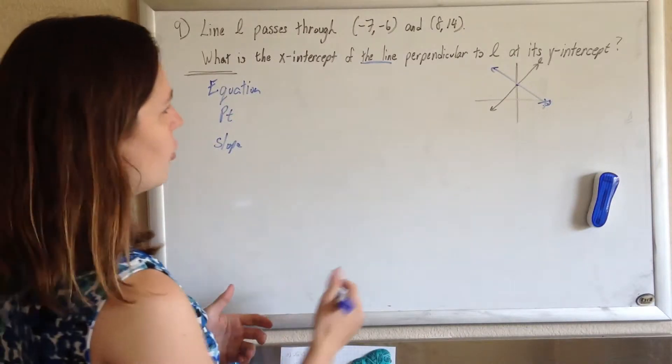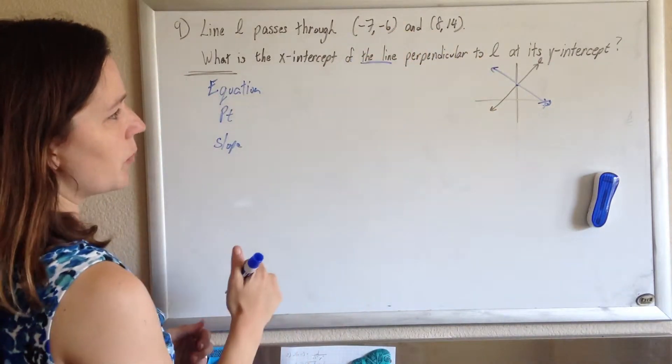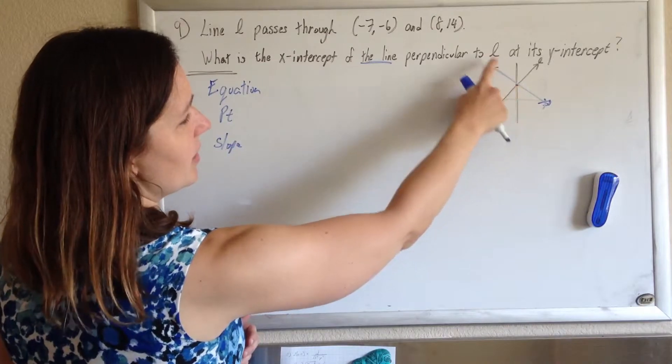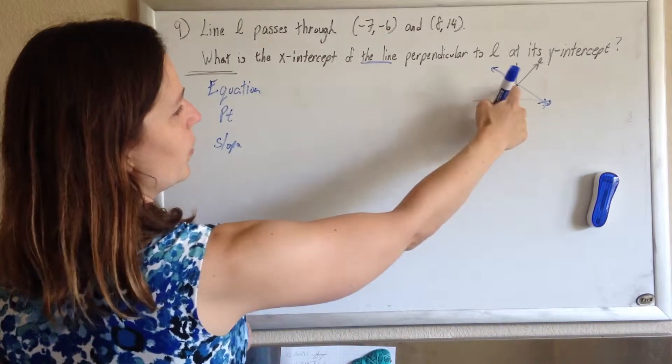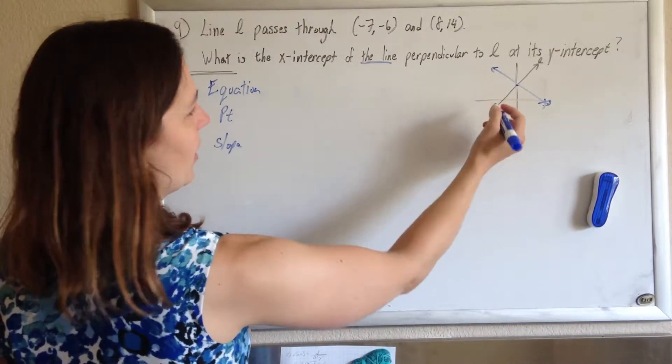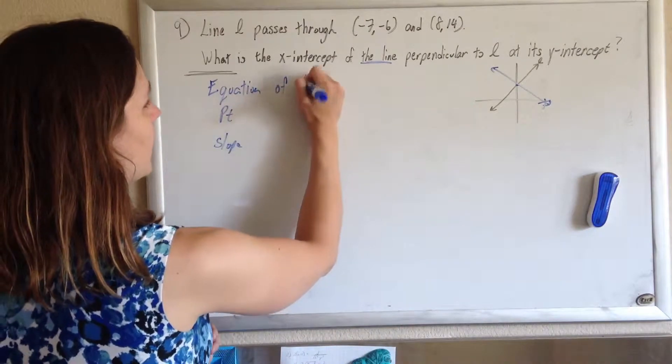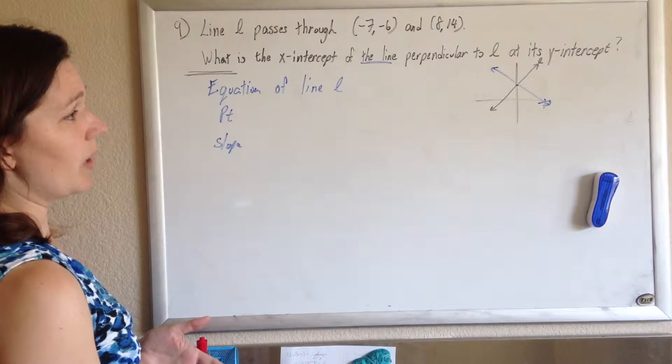I know my slope is supposed to be perpendicular to L's slope, and I know my y-intercept should be the same as the y-intercept of L. I don't know what the y-intercept of L is yet, so let's find the equation of line L first, and then we'll find the equation of our new line.